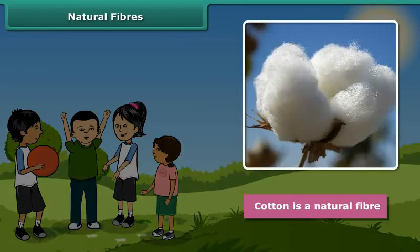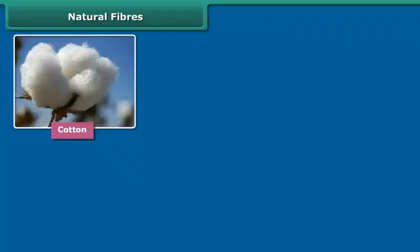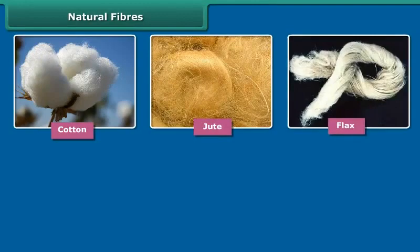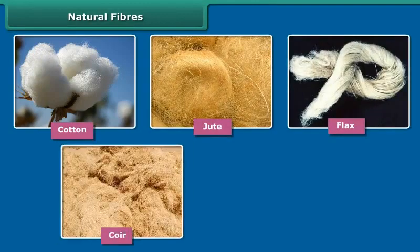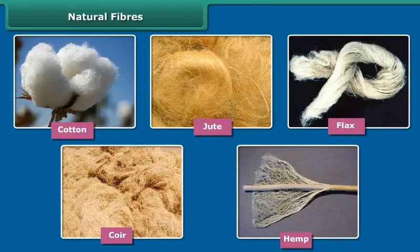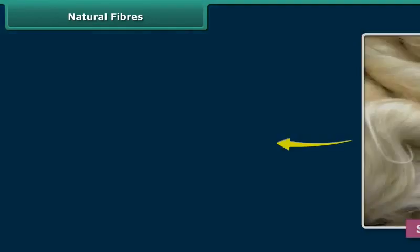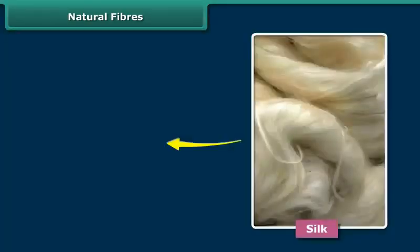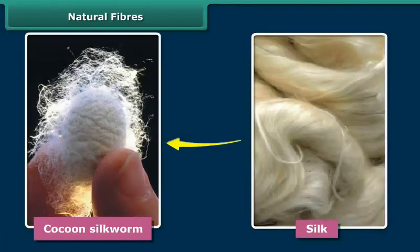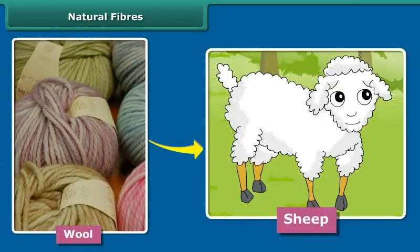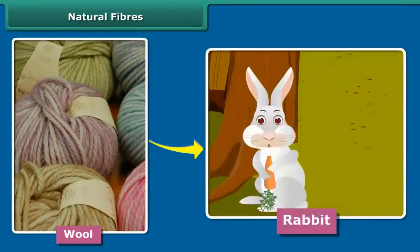Fibers can be both natural or artificial. You feel so comfortable when you wear cotton clothes in summer — cotton is a natural fiber. Natural fibers like cotton, jute, flax, coir, hemp, etc., are obtained from plants. Silk fiber is drawn from the cocoon of the silkworm.